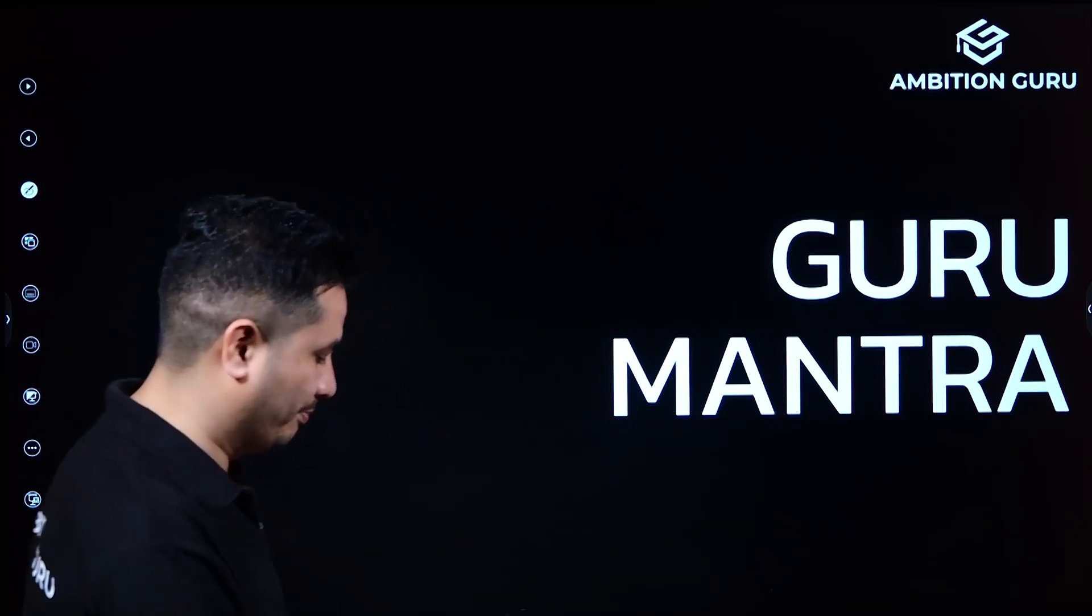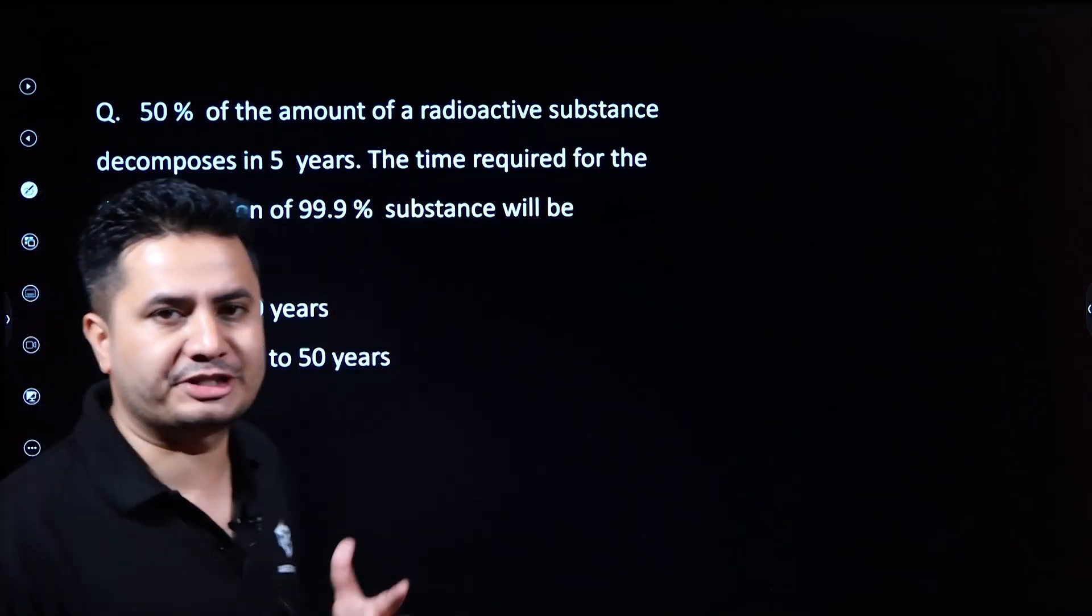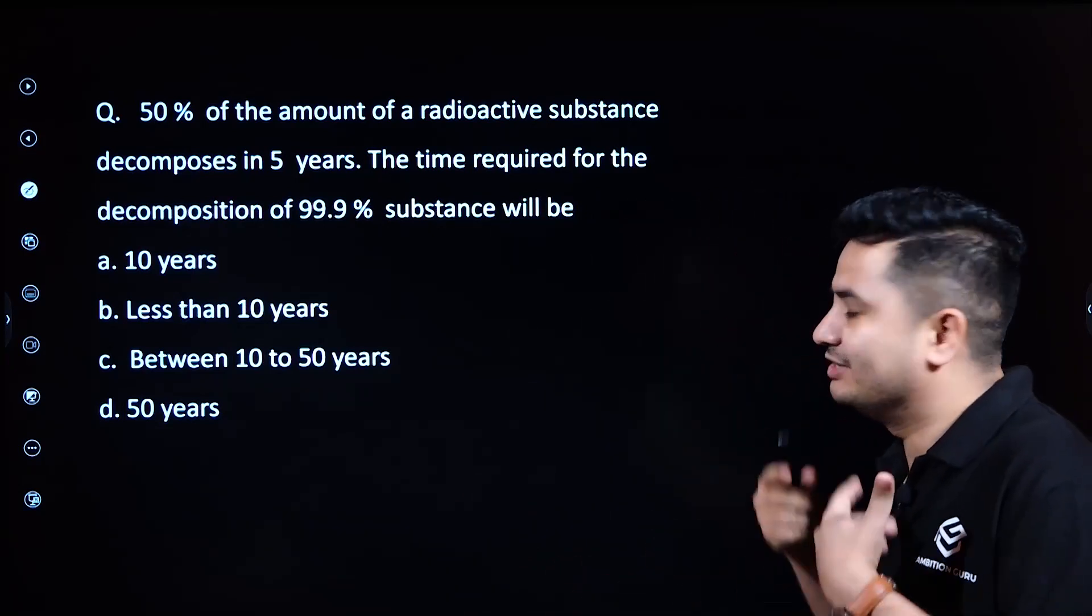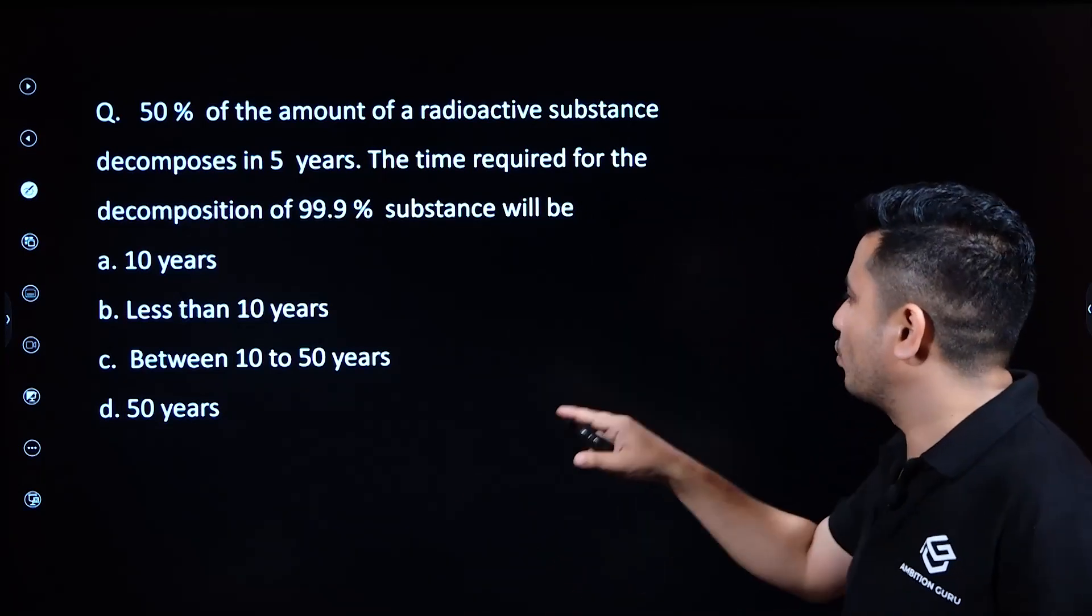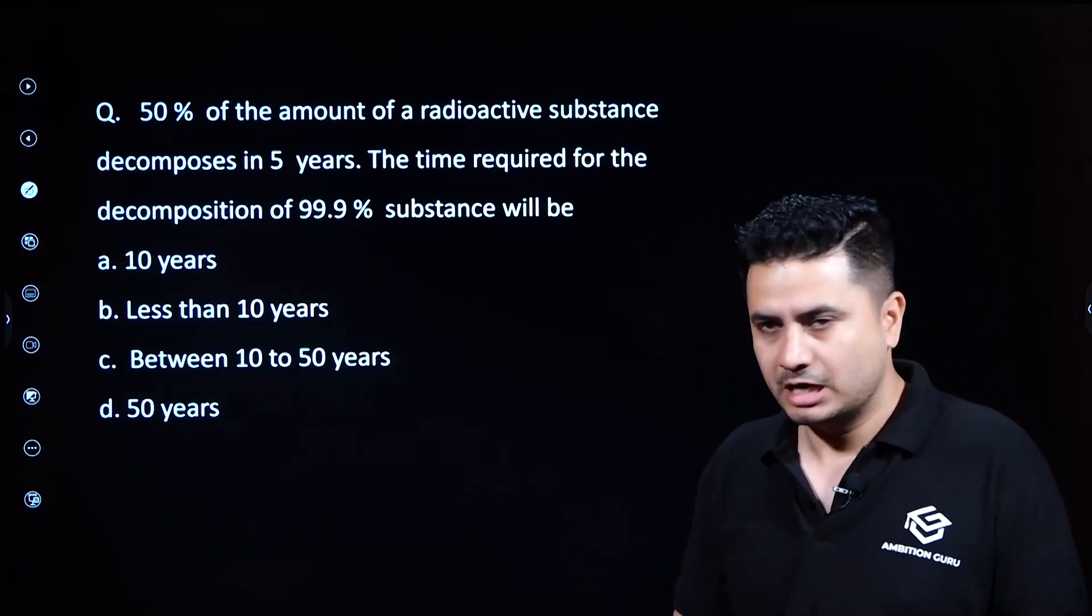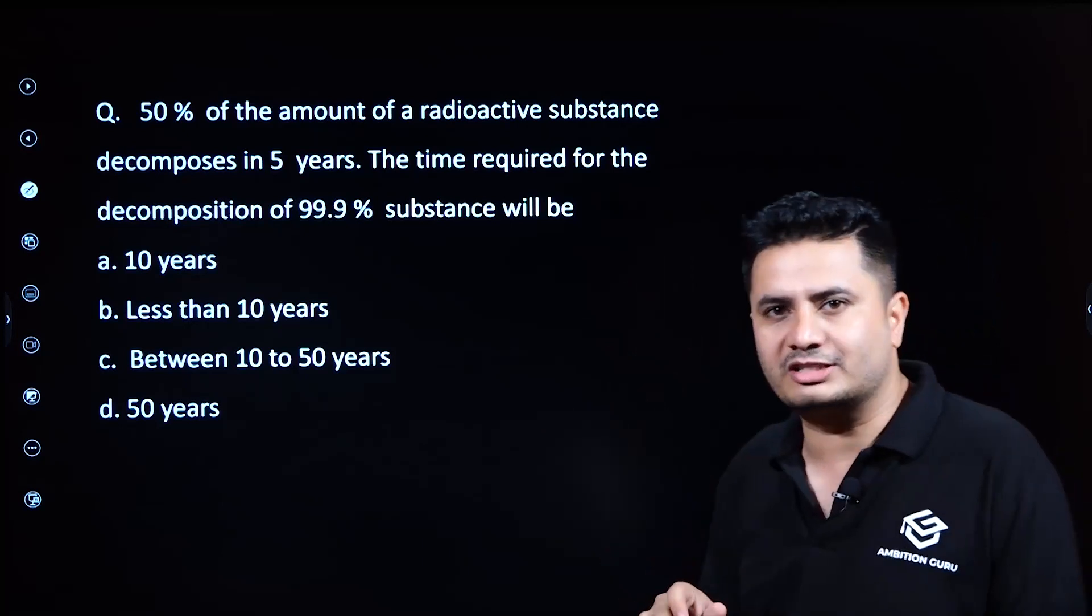50% of the amount of a radioactive substance decomposes in five years. The time required for the decomposition of 99.9% substance will be what? This follows first-order kinetics, and we are given a radioactive decay or radioactive disintegration problem.